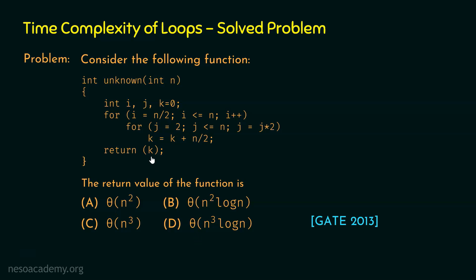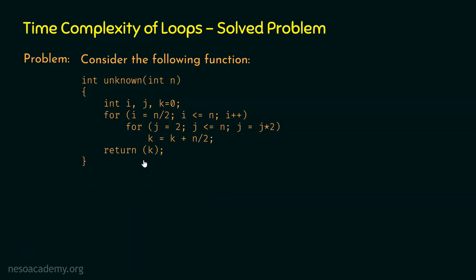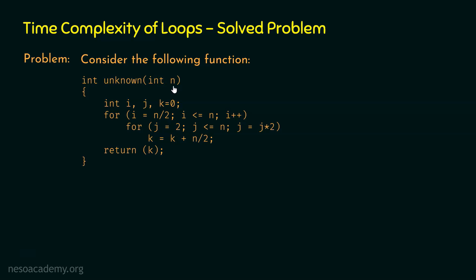Now let's find the value of k. We have this function unknown. The return type is int, meaning this function will return an integer value, and the parameter is n. Within this function, three variables i, j, and k are declared, where k is initialized to zero. Then we have this nested for loop structure.